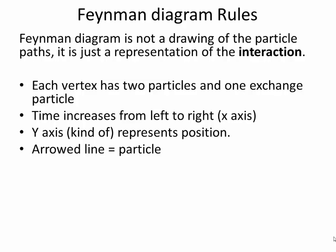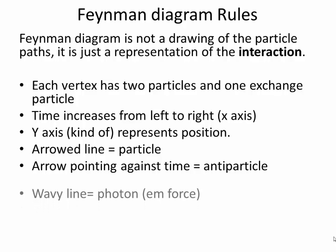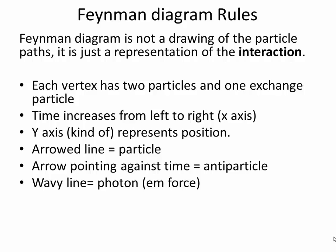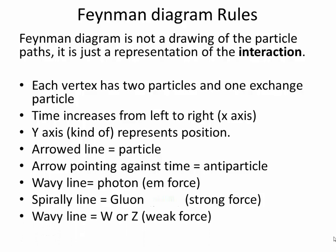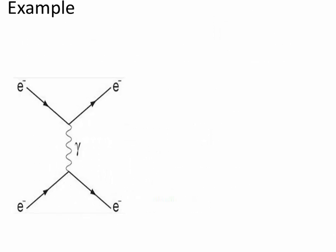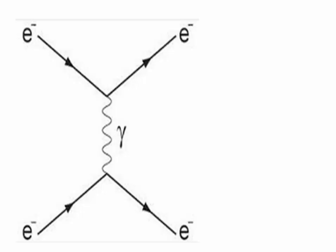The arrow and solid line is a particle. The arrow pointing against time is an anti-particle. The wavy line is a photon which mediates the electromagnetic force. The spirally line is a gluon which mediates the strong force. The wavy line is also a W or Z which mediates the weak force.